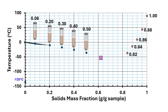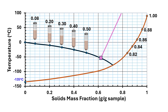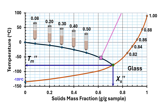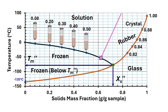Now draw the freezing curve passing through freezing points and eutectic points, the solubility line passing through the eutectic point, then draw the glass line passing through the glass transition temperatures. We could locate the maximal freeze concentration condition, which is the intersection of the freezing curve and the glass line. The characteristic Xs double prime can be located on the x-axis and Tm double prime can be located on the y-axis. Now we can identify the different regions: glass, rubbery, crystal, solution, frozen above Tm double prime, frozen below Tm double prime, glass line, freezing curve, and solubility line.